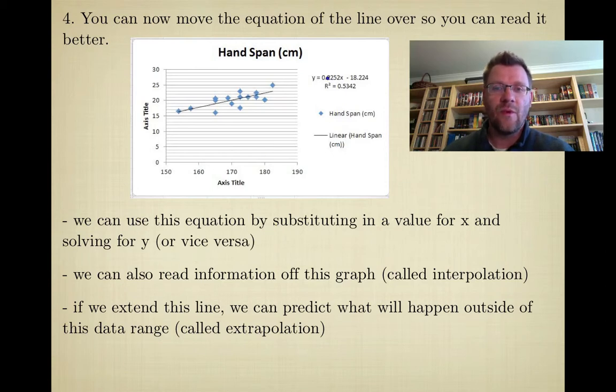We can use this equation, y = 0.2252x - 18.224, and you could substitute in any value of x. So if you wanted to find out what the hand span was for someone who was 165 centimeters tall, that would correspond—you could look right on the graph and move over to find it would be somewhere around 18 or 19 centimeters. Or you could just plug that 165 right into your equation for x and find your answer that way. Or if you wanted to find out if that person had a hand span of 26 centimeters, you could find out how tall that person was by plugging in 26 for y and then solving for x.